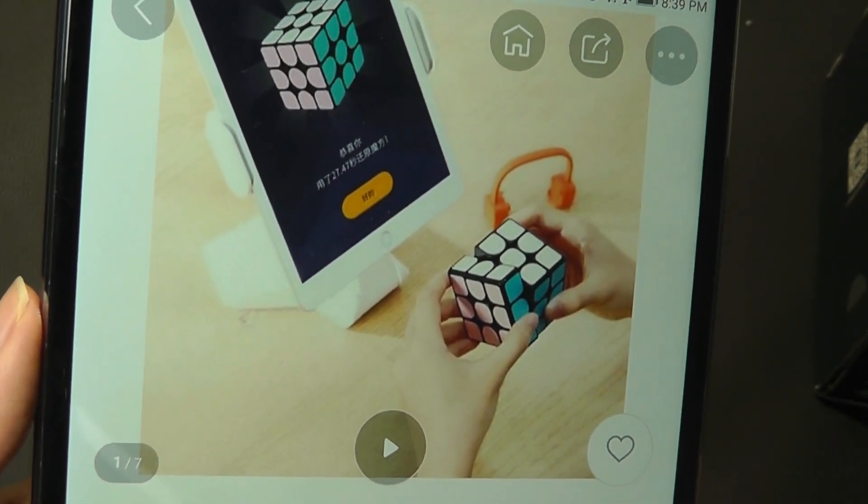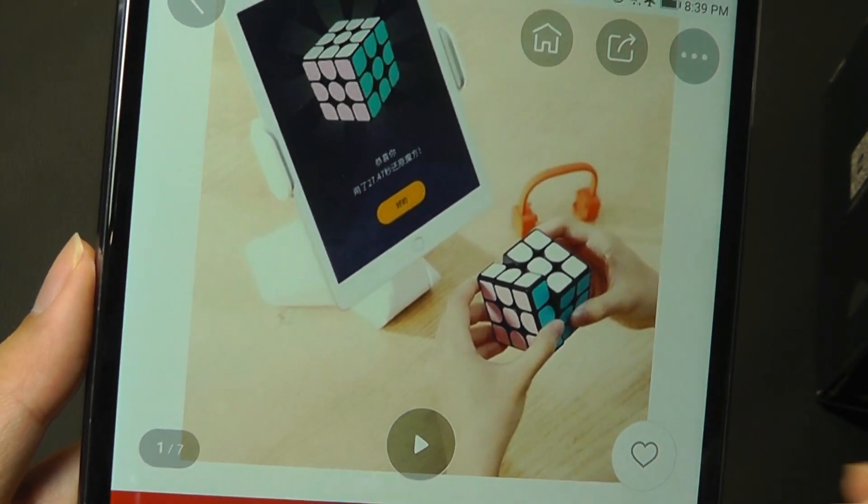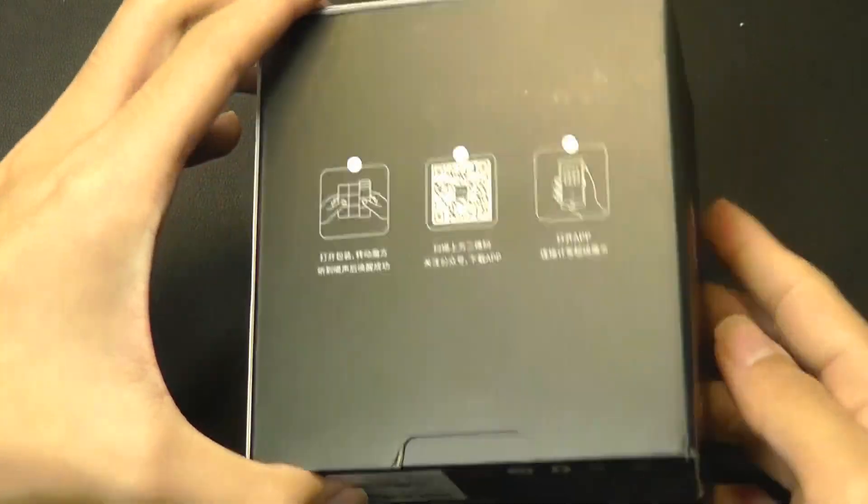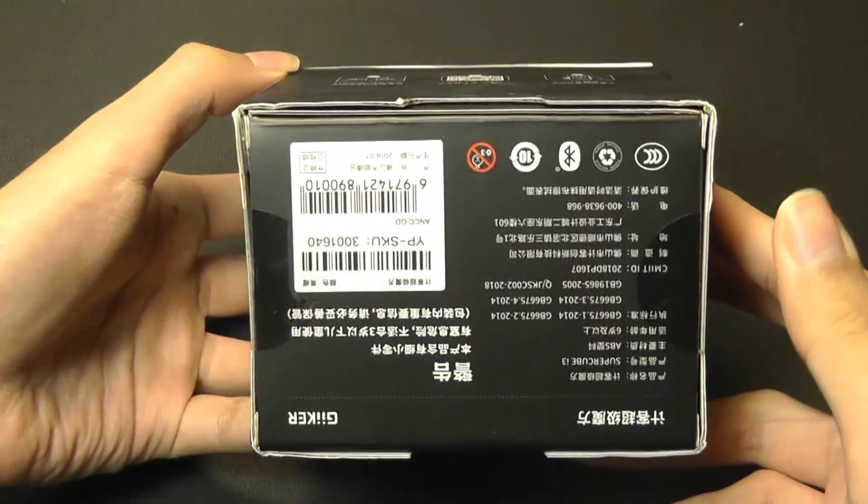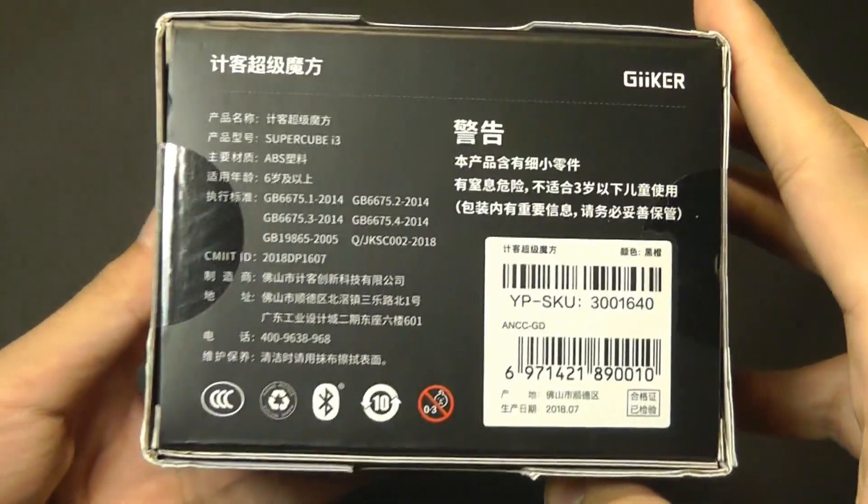There are accelerometers and motion sensors inside that can detect the position of the cube as you're trying to solve it. Almost reminds me of the Xiaomi Populele, which was their smart ukulele. They're trying to get into more of these educational lifestyle products outside of just making smartphones.